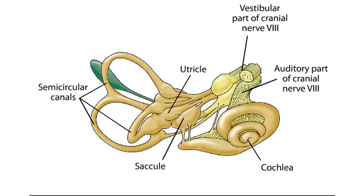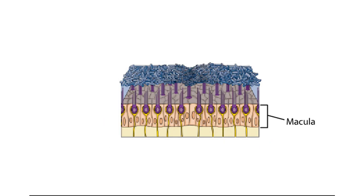The vestibular hair cells, which, like cochlear hair cells, transduce minute displacements into behaviorally relevant receptor potentials, are located in the utricle and saccule, and in three jug-like swellings called ampullae, located at the base of the semicircular canals next to the utricle. In the utricle and saccule, the sensory epithelium, or macula, consists of hair cells and associated supporting cells.